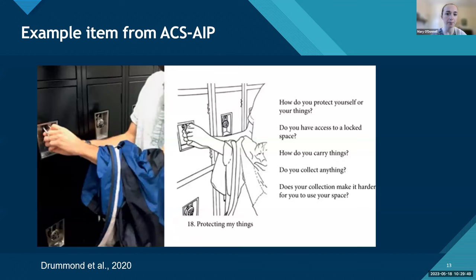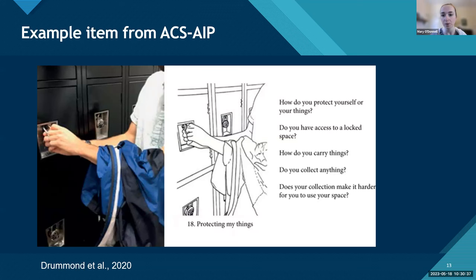Here's a snippet of one of the cards in this modified Activity Card Sort — this one is related to 'protecting my things,' asking: How do you protect yourself or your things? Do you have access to a locked space? How do you carry your things? It's a nice tool — it's visual, which is inclusive for folks who are more visual learners, and it includes occupations that we might not think of as daily activities but that are really critical to the day-to-day of some folks experiencing homelessness.